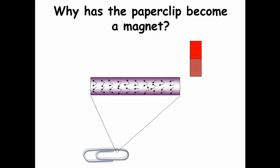So what's happened inside the magnet? Well, inside the magnet there are domains, and as you stroke the magnet with the paper clip, the domains line up.